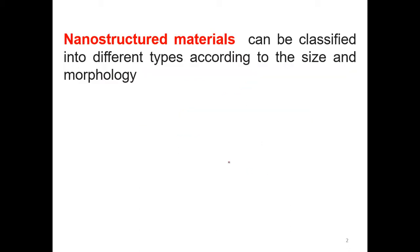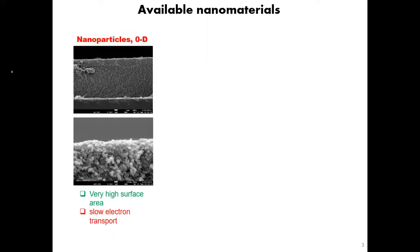Nanostructure materials are divided into many types according to their size or morphology, meaning shape. If it is one dimension, we call it one dimension — if it looks like a rod, we say it is one dimension. If it looks like a particle — a nanoparticle — it is zero dimension. So the available nanostructures: the first one is nanoparticle, which we call zero dimension.